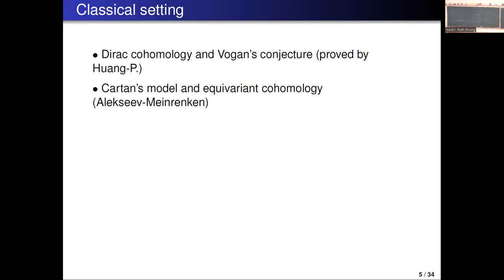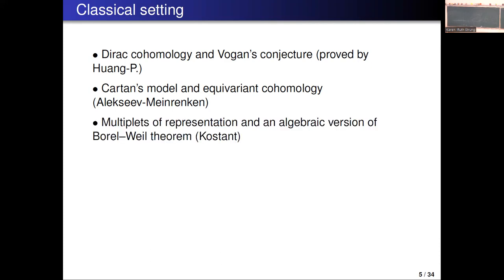Then there is Alekseyev and Meinrenken's work, about Cartan's model and equivariant cohomology — a non-commutative version of equivariant cohomology; that was their motivation. Then Kostant was talking about multiplets of representations, which are actually the components of this Dirac cohomology in the relative case, and he had also an algebraic version of the Borel-Weil theorem, some generalization.